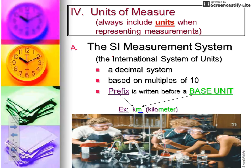The system of measurement that we use in chemistry and in science is called the SI measurement system, otherwise known as the international system of units. It is a decimal system, which means we're going to be moving our decimal right and left to convert. It's based on multiples of 10.